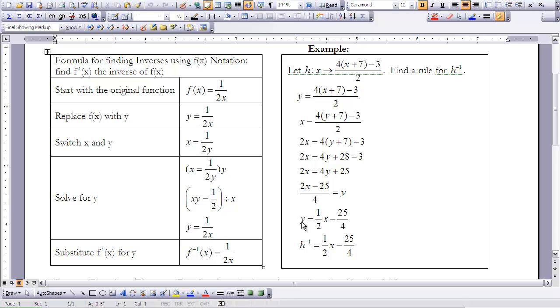And then I can substitute y for h^(-1), which is just the inverse of h. And that is our inverse function of (4(x+7)-3)/2.